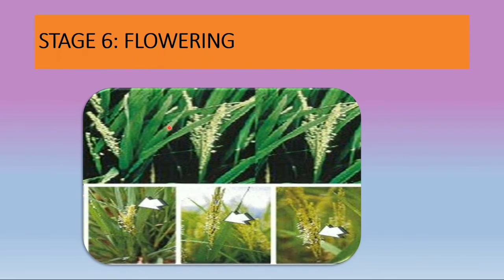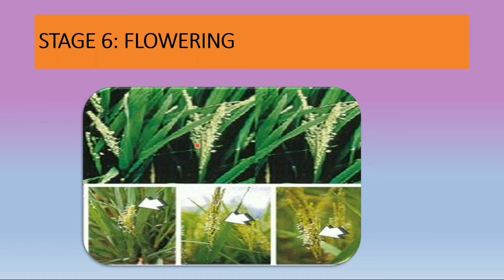In the flowering stage, anthesis occurs: the florets open, anthers protrude, and florets then close. It occurs about 25 days after the visual panicle initiation, and the plant is most sensitive to stress at this stage. You can observe the florets and the pollen and anther which have protruded.